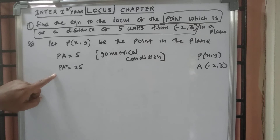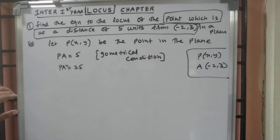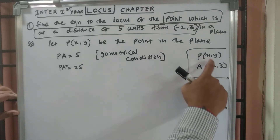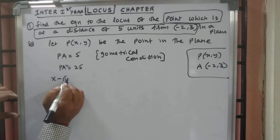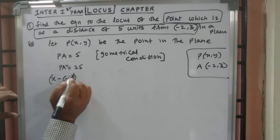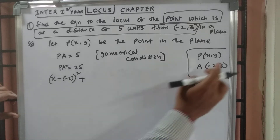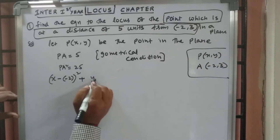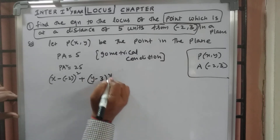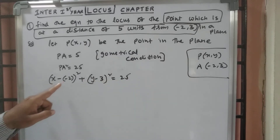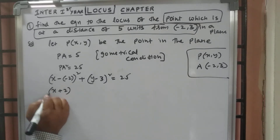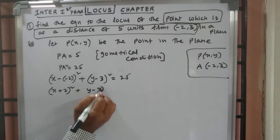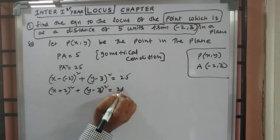P A square is the distance between P of X comma Y and A of minus 2 comma 3. The distance formula gives X1 minus X2 whole square plus Y1 minus Y2 whole square. That is X minus negative 2 whole square plus Y minus 3 whole square equal to 25, which gives X plus 2 whole square plus Y minus 3 whole square equal to 25.